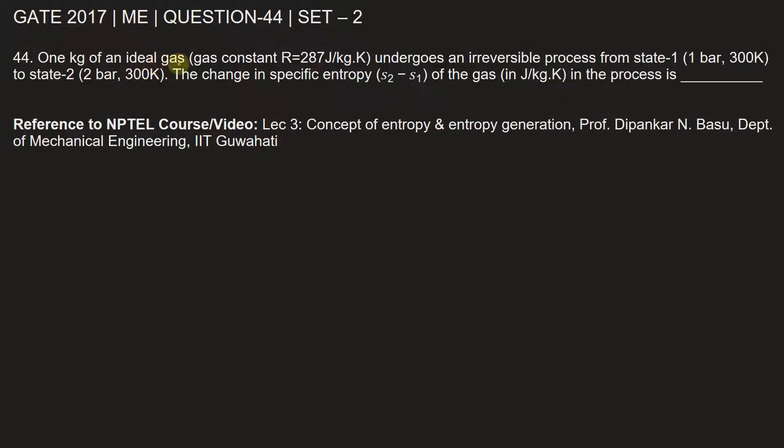1 kg of ideal gas with gas constant R equals 287 joules per kilogram Kelvin undergoes an irreversible process from state 1 at 1 bar pressure and 300 Kelvin temperature to state 2 at 2 bar pressure and 300 Kelvin temperature.